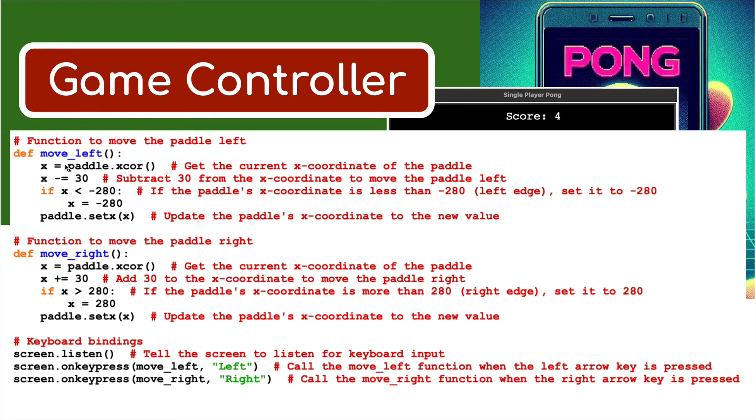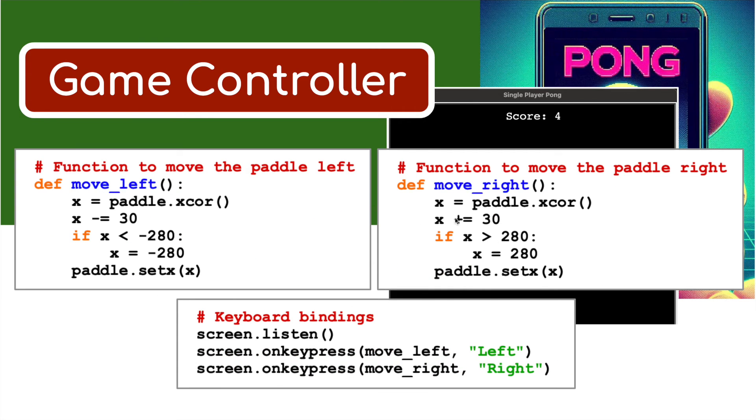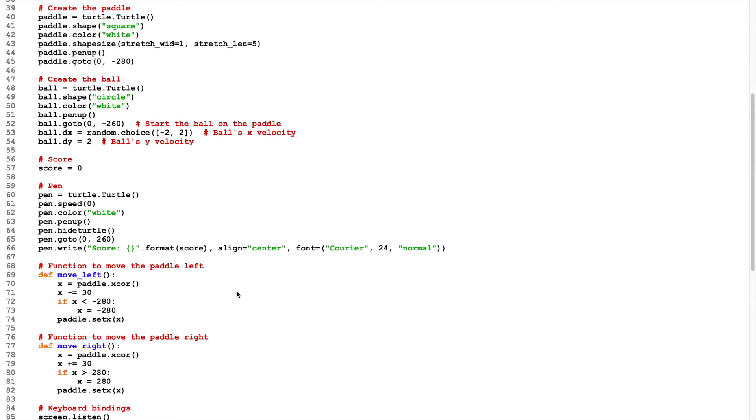We've defined move_left and move_right. We've called these here - the screen listens for any keyboard presses. screen.onkeypress(move_left, "Left") - call the move_left function. And when we press right, we'll call the right function. That's how we're moving the paddle left and right. There it is without all the comments written. These values can be changed. You can change the keys as well - A and D, Z and X, whatever you want to use.